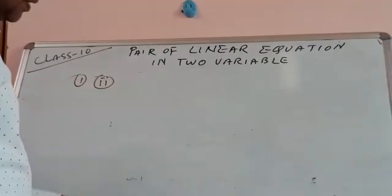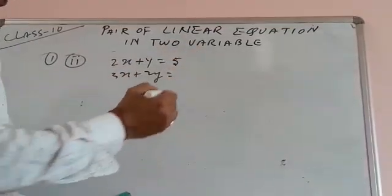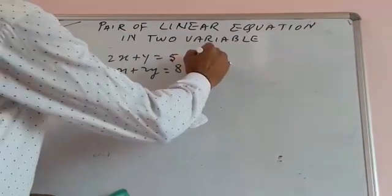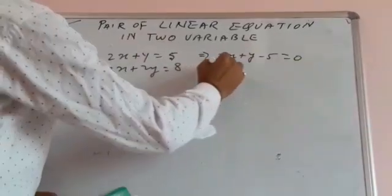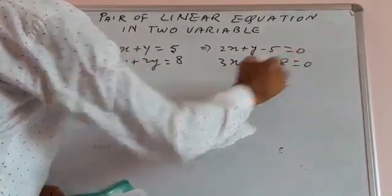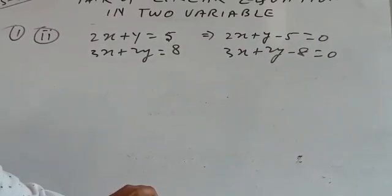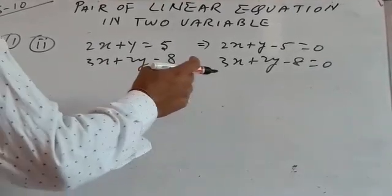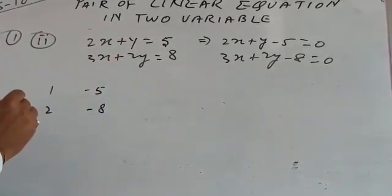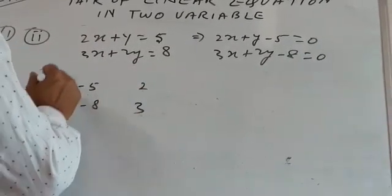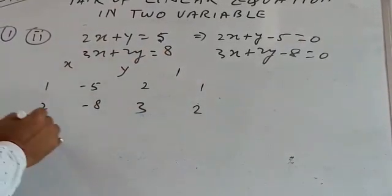The second part of Question 1 is: 2x + y = 5 and 3x + 2y = 8. Here a1/a2 ≠ b1/b2, so we may proceed. First, write in general form: 2x + y − 5 = 0 and 3x + 2y − 8 = 0. Now list the coefficients: b1, b2 = 1, 2; c1, c2 = −5, −8; a1, a2 = 2, 3; and again b1, b2 = 1, 2. Write x, y, and 1.